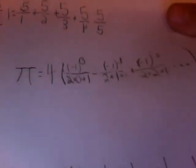4 times negative 1 to the 0th power over 2 times 0 because m equals 0 plus 1, minus negative 1 to the 1st power because the 1st power is substituting m, and then 2 times 1 which is also m plus 1.